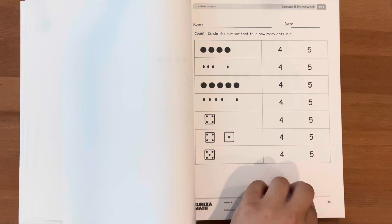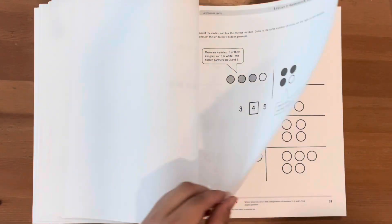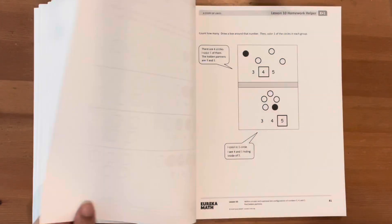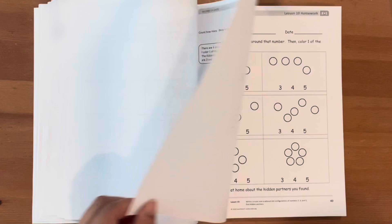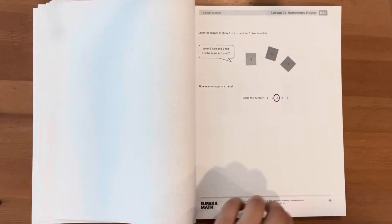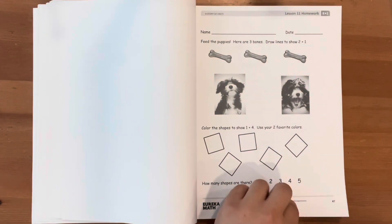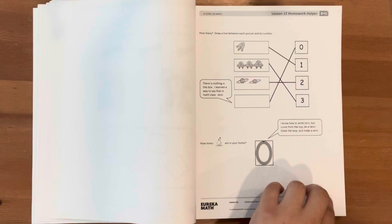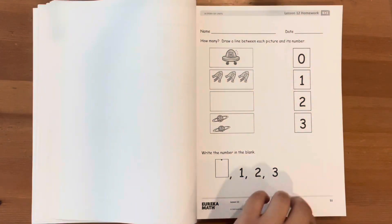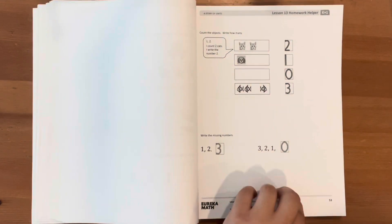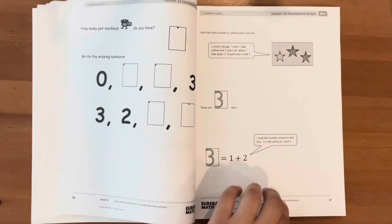Each problem set is accompanied by a homework helper, which is a set of worked examples that illustrate how to solve similar problems. Parents and their children can use Succeed books from prior grade levels as curriculum-consistent tools for filling gaps in fundamental knowledge.